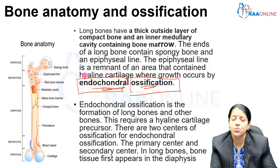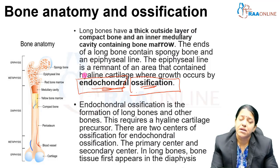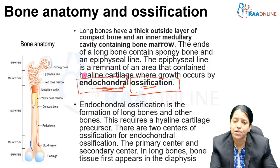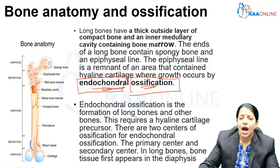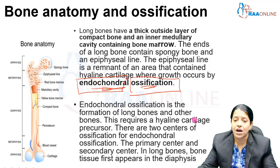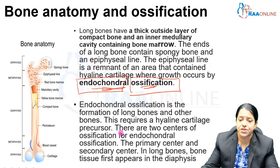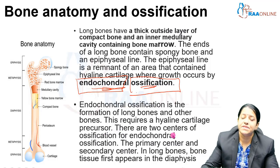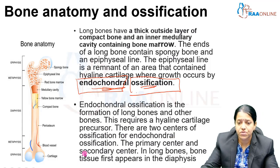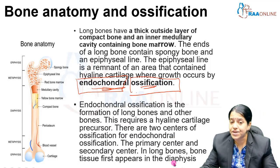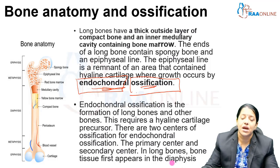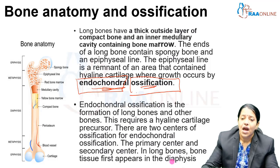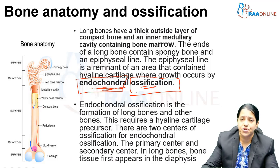Endochondral ossification means first a cartilage layout is laid and then the cartilage gets ossified. It always requires a hyaline cartilage precursor. A model of hyaline cartilage is first made, then there are centers of ossification classified as primary centers and secondary centers. In long bones, bone tissue first appears in the diaphysis or shaft of the bone.